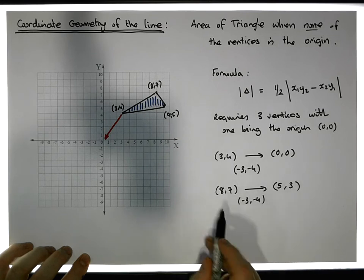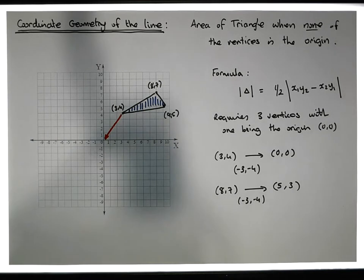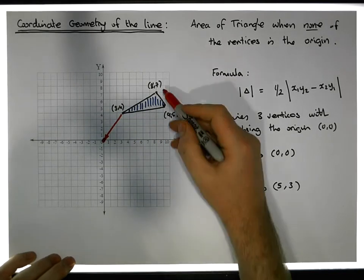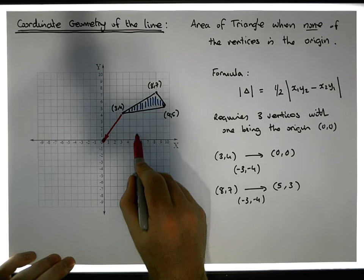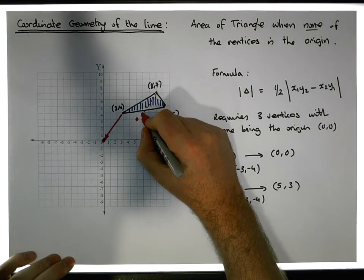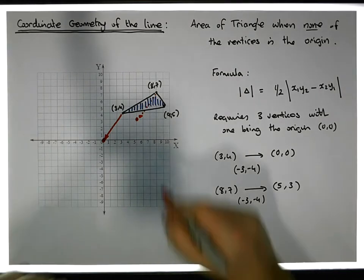So we're actually taking 3 away from the 8 and we're taking 4 away from the 7. So effectively, 8,7 is taken to 5,3. Let me use this as the fourth point. And 8,7 is taken to 5,3. So we have 8,7 is effectively taken to this point here.